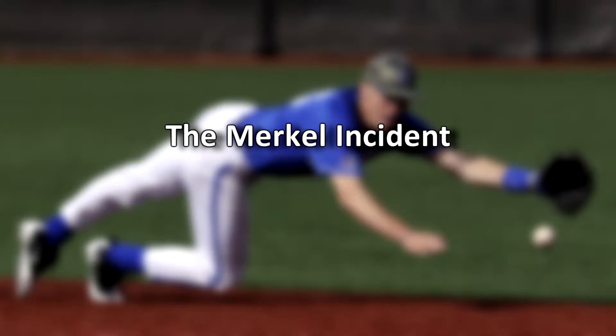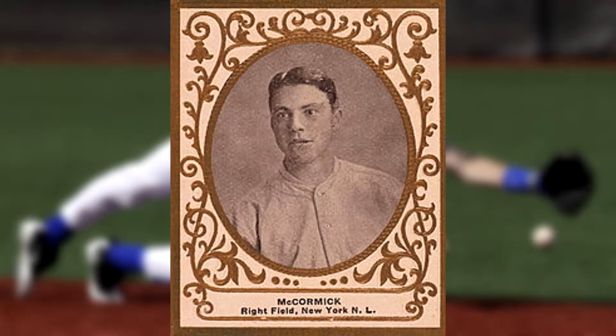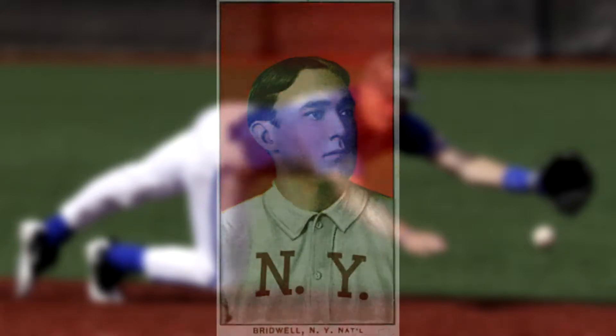In 1908, on 23rd September, a game between the American League and National League teams took place at the Polo Grounds. The game, between the New York Giants and Chicago Cubs, concluded in an inexplicable turn of events known as the Merkle Boner. Fred Merkle was the first baseman along with his teammate Moose McCormick, who was on third base with two outs and the game tied. Al Bridwell struck a single scoring McCormick, apparently winning the game.